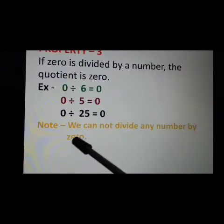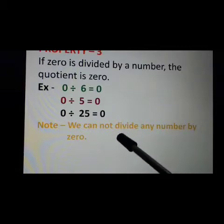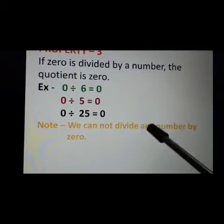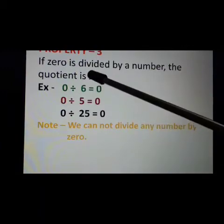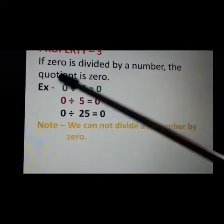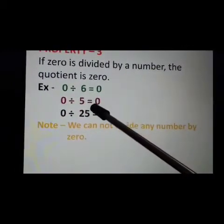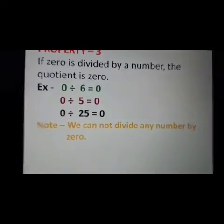Now, remember one thing: we cannot divide any number by 0. This means 0 cannot be the divisor. We cannot divide any number by 0.